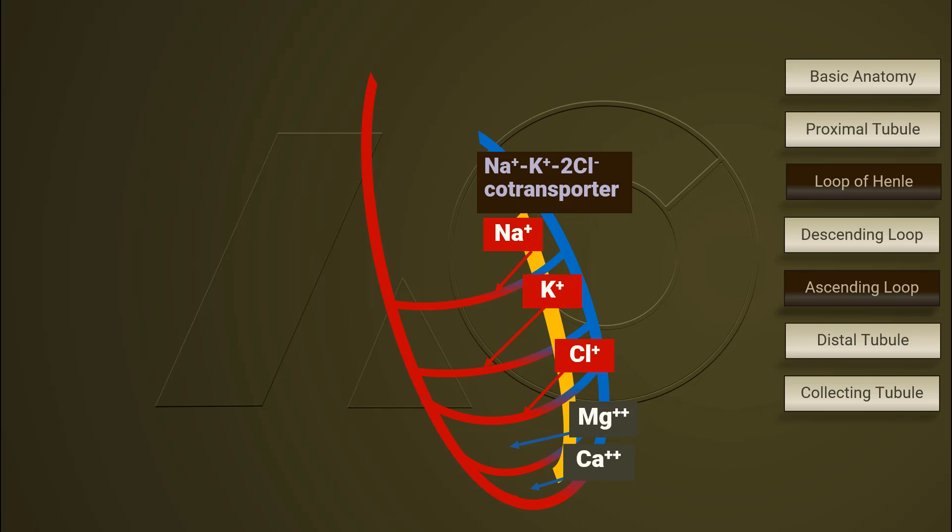Thus, ascending loop of Henle is the diluting site of the nephron. Diuretics working on ascending loop of Henle produces the most powerful diuresis. Loop diuretics are the example.